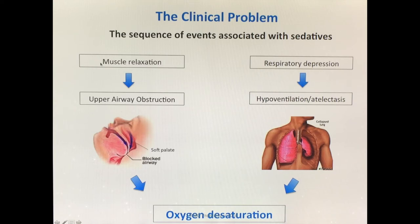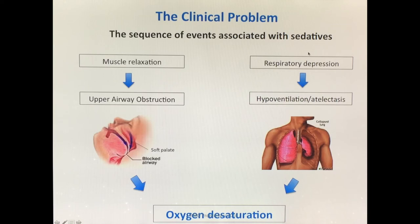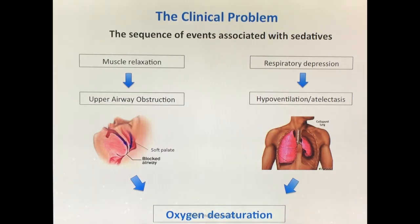When we give sedation, it causes the muscles of our airways to relax, causing the tongue to fall into the retropharyngeal space and obstruct it. Oxygen can't get into our lungs or blood, resulting in oxygen desaturation — essentially low blood oxygen levels. When our brain relaxes, it tells the body to stop breathing, which is known as hypoventilation. If we can't draw oxygen into our lungs, they collapse, and oxygen can't get into the blood, again resulting in oxygen desaturation. Oxygen desaturation can also eventually lead to pneumonia if the lungs collapse significantly enough, cardiac arrest, and potentially death.